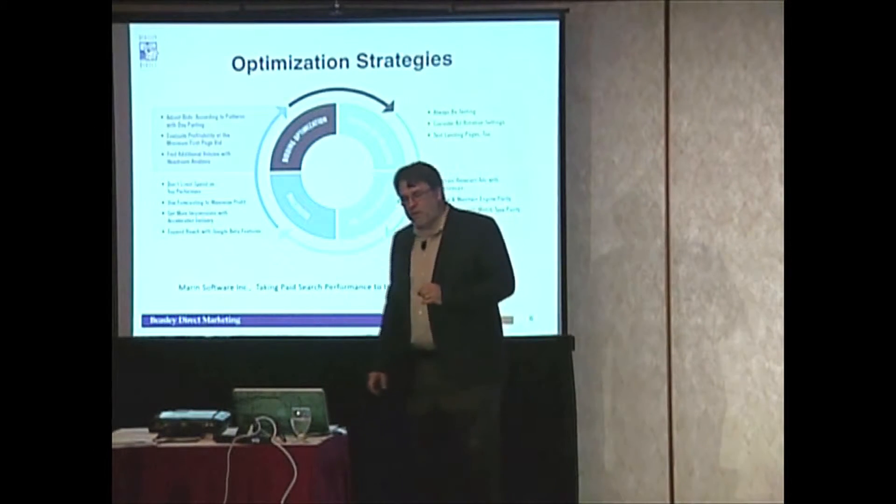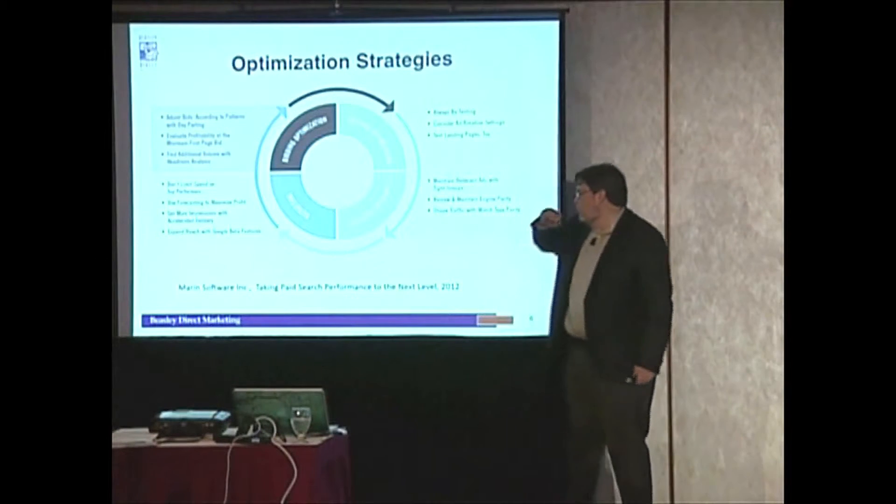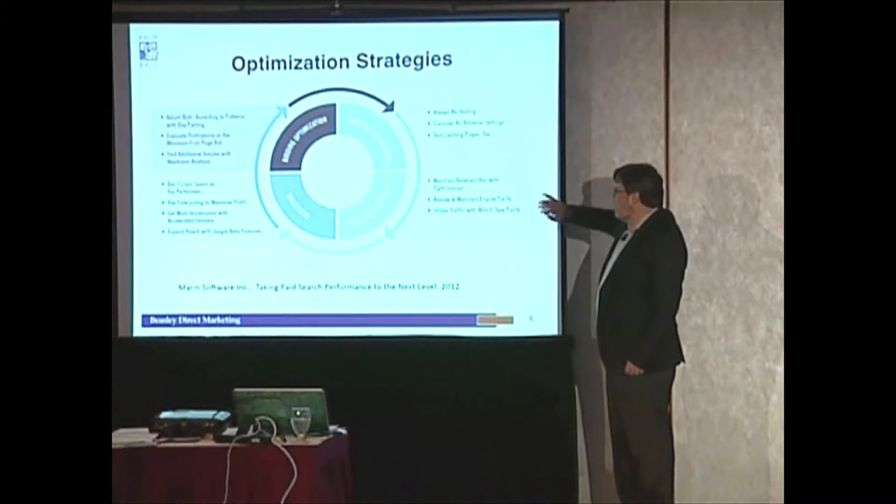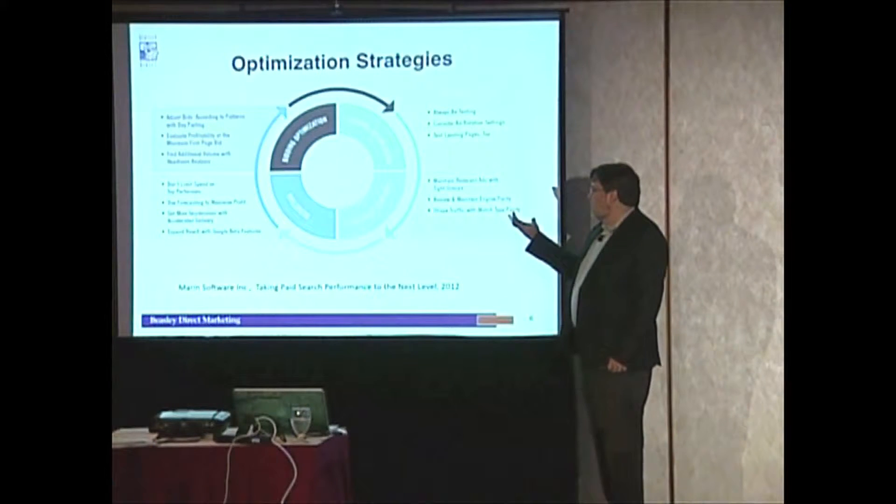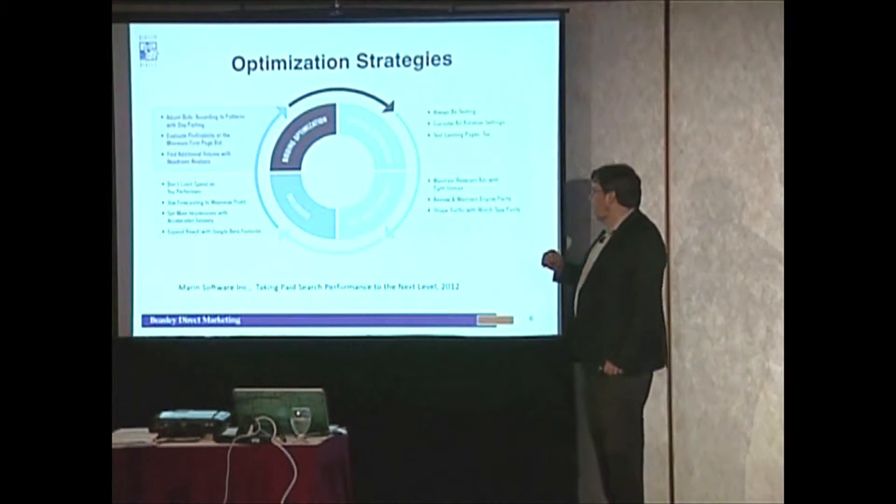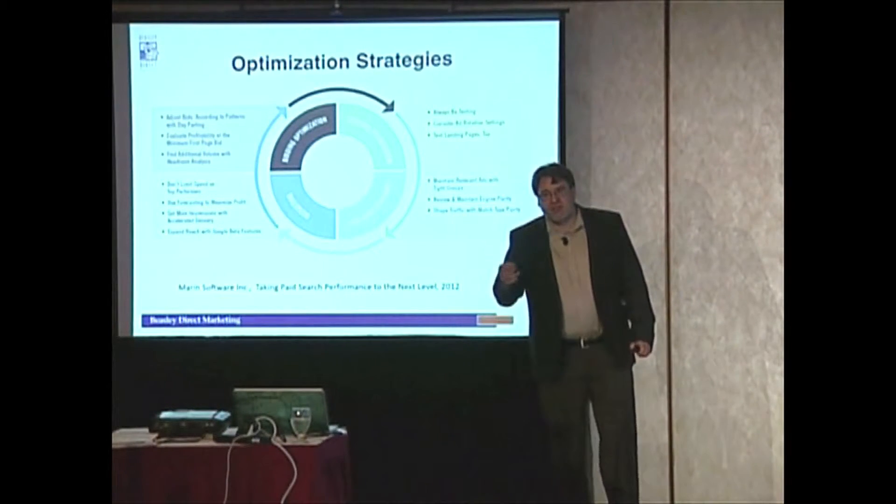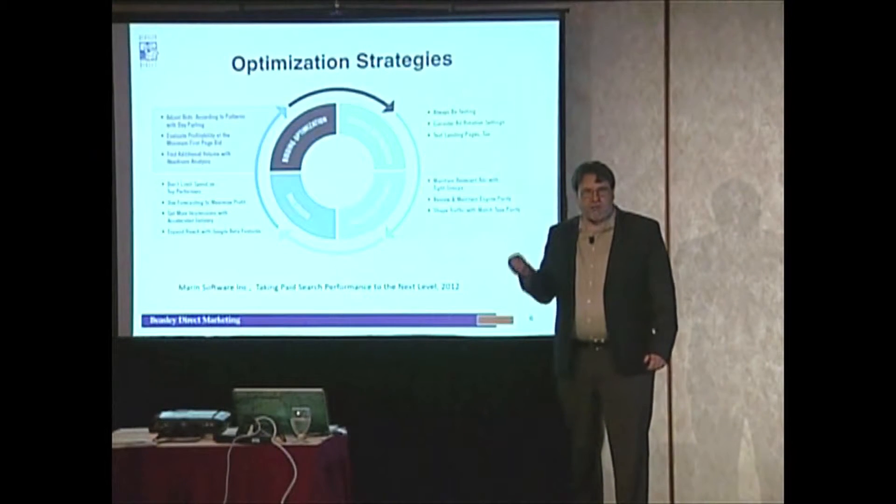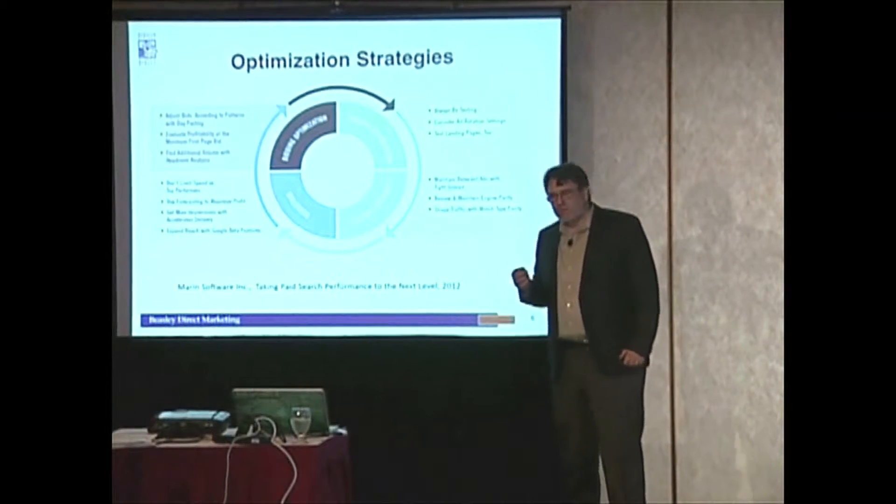There are different elements you can optimize - this is from a Marin white paper. You can do bidding optimization, creative optimization, optimize your campaign structures and targeting, look at your budgeting, and put the money where it's performing. It's an ongoing cycle with no final destination. You're always looking for the next way to get that last ounce of efficiency out of your campaign.